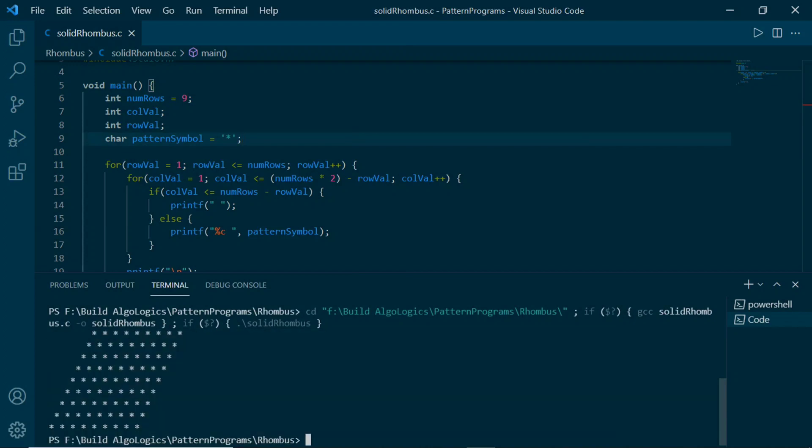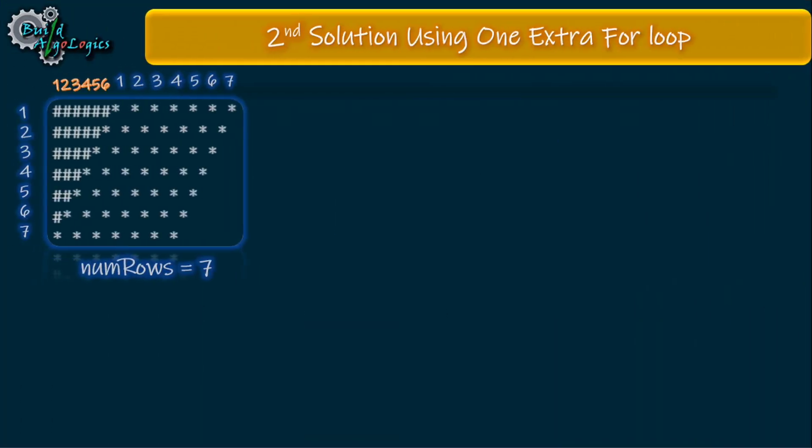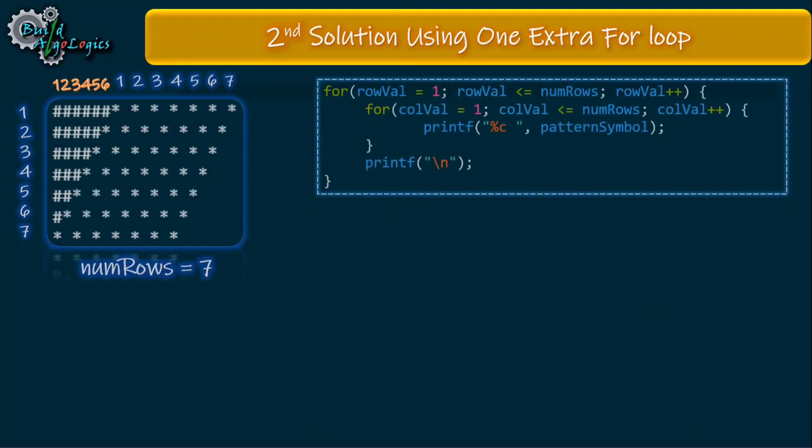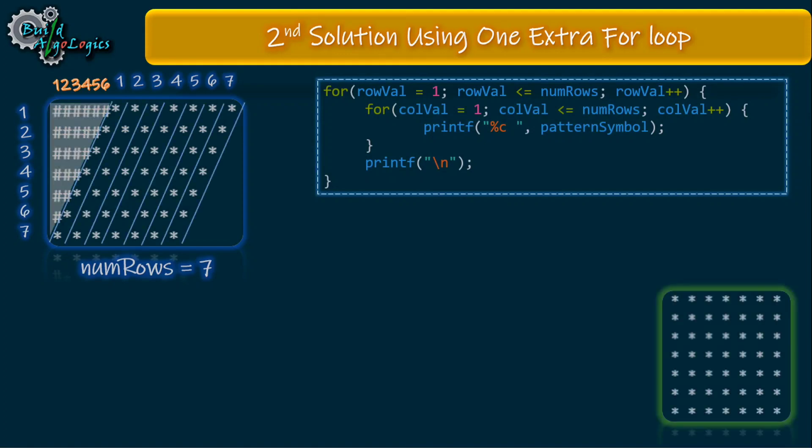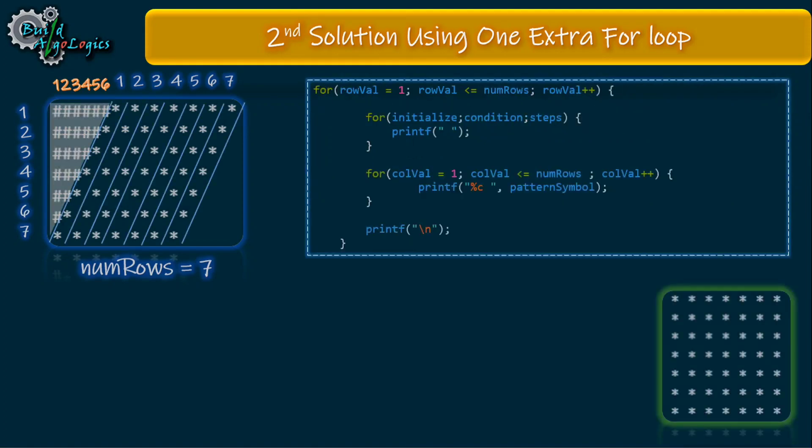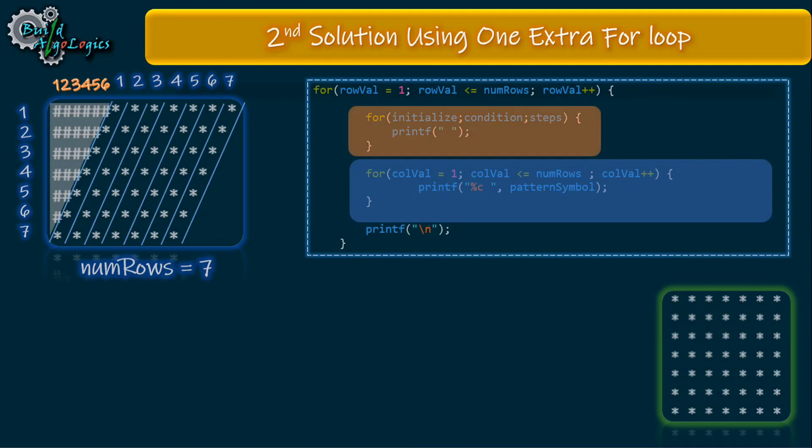Now let's see our next solution. This code will be as it is. This is the code that we had written for our solid square pattern in our previous tutorial. As we have to print these spaces before this pattern symbol, we'll use another inner for loop to do this job, like this one. It simply means that instead of running this for loop for each row, now we'll use one extra loop that will also run for each value of row.